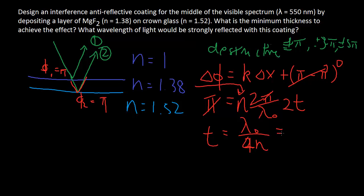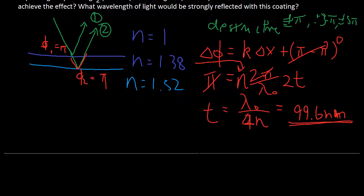Working out that number, we get 99.6 nm. And that's the thickness of the anti-reflective coating to minimize the reflection at 550 nm.